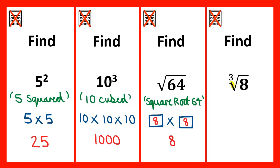Lastly, we have a root symbol but we also have a little 3 to the left hand side of it. This is pronounced as the cube root of 8 and this would be the number that multiplies with itself and then itself again to give us 8. In this case, 2 times 2 times 2 would give us 8. So the cube root of 8 is 2.